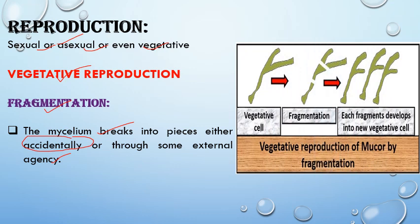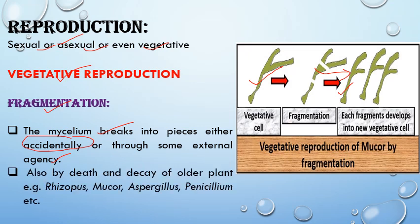In case of Mucor fungus, fragmentation occurs where each fragment after breakdown can give rise to a new Mucor thallus. Each fragment has the capacity to form a full-fledged thallus. It also occurs by death or decay of the thallus. Examples include Rhizopus, Mucor, Aspergillus, and Penicillium, which show vegetative reproduction by the method of fragmentation.